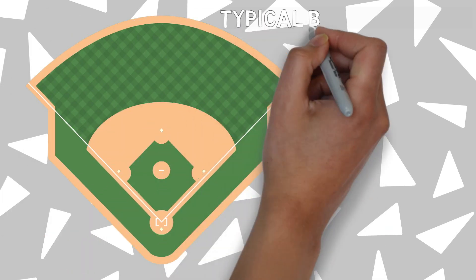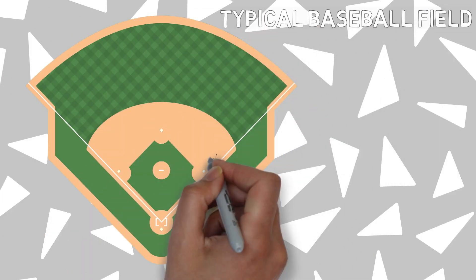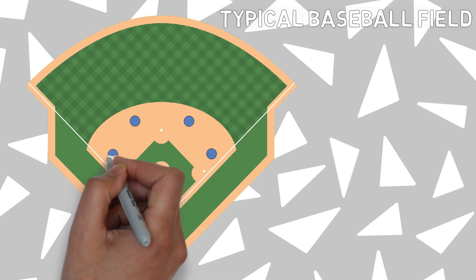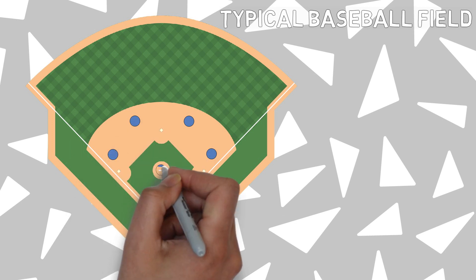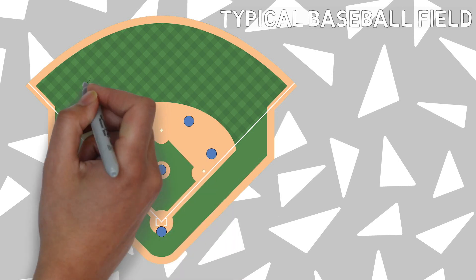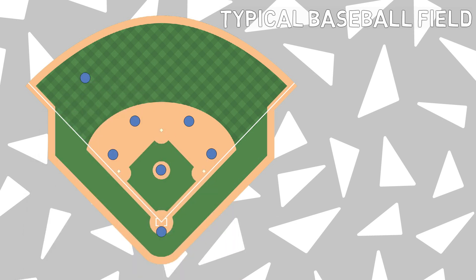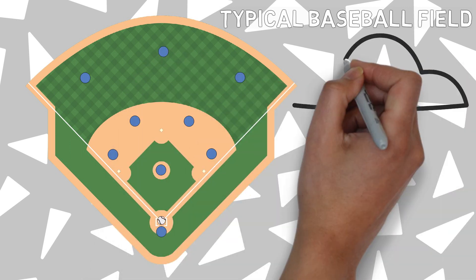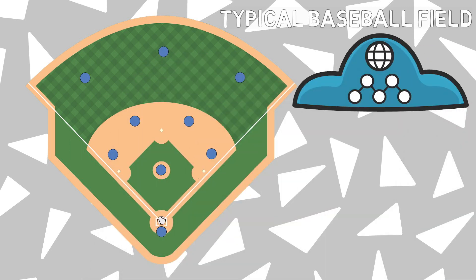If I were to ask you to take a step back and envision what a typical baseball team looks like out on the field, what would you see? Most likely, you would picture all four infielders stationed at their respective bases, and the outfielders spread equidistant apart from one another in the outfield.